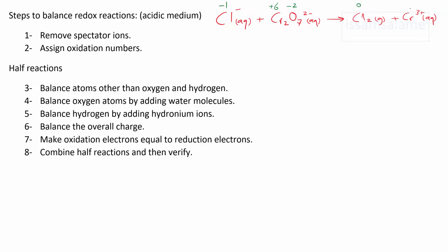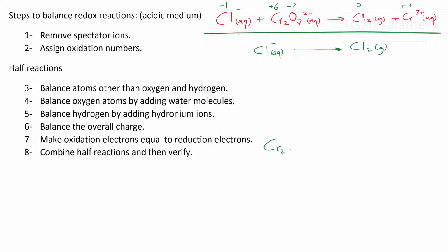As you notice here, the oxidation number for chlorine increased, so it's oxidized, while the oxidation number of chromium decreased, so it is reduced. After recognizing the elements that are reduced and the elements that are oxidized, it's going to be easy for us to write the half reactions to continue the steps in balancing redox reactions. We write it so that chloride ions are converted to chlorine, and chromium oxide is changing to chromium ions.